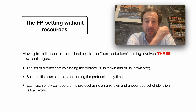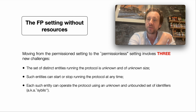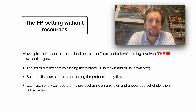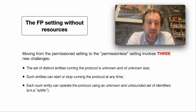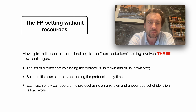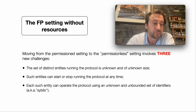As we move from the permissioned setting to the permissionless setting, what happens is that we introduce three new challenges all at once, as detailed on this slide. First of all, the set of distinct entities running the protocol is now unknown and of unknown size — that's not the case in the permissioned setting where we have a fixed set of known participants. Second, the entities running the protocol can now start or stop running the protocol at any time — they can be active, then inactive, then active again. Third and distinct, we have to deal with the possibility of sybil attacks: each entity can operate the protocol using an unknown, unbounded number of identifiers.